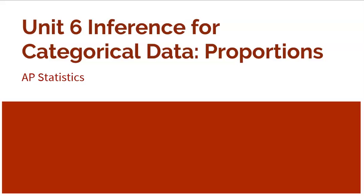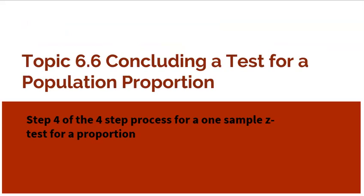Welcome to Unit 6, Inference for Categorical Data on Proportions. This video is Topic 6.6, Concluding a Test for a Population Proportion. We're finally on Step 4 of the 4-step process for a 1-sample Z test for a proportion.